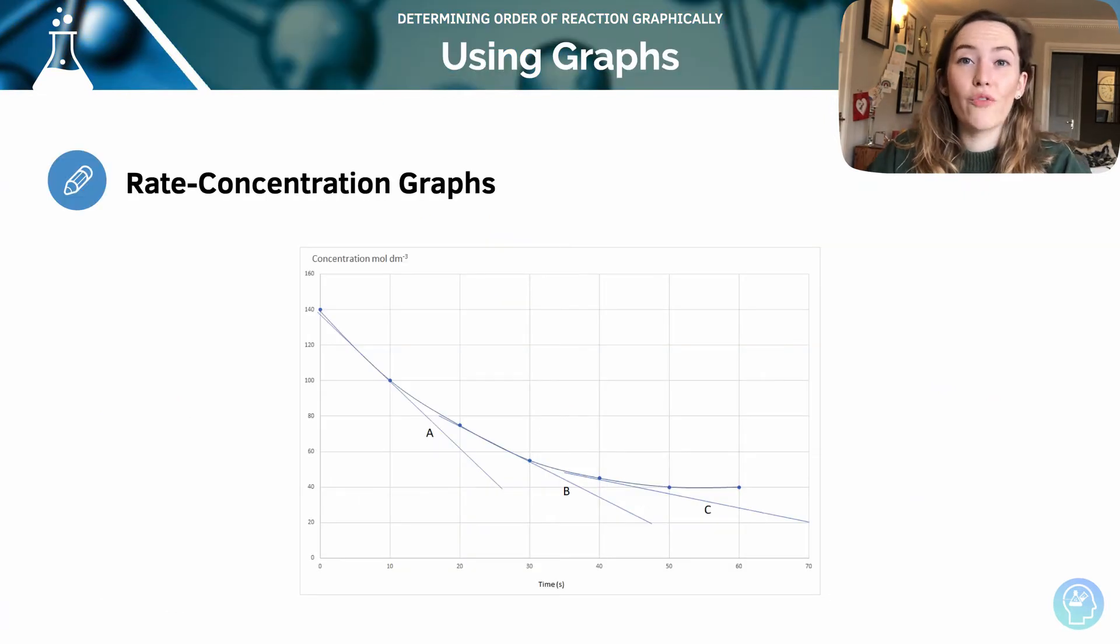The order of reaction can be determined graphically. Remember, I said that you cannot work it out through using moles, stoichiometric ratios, or anything. You need to do an experiment, plot the graph, and have a look. And we're going to look at the different patterns that we're looking for for each of the different types of orders.